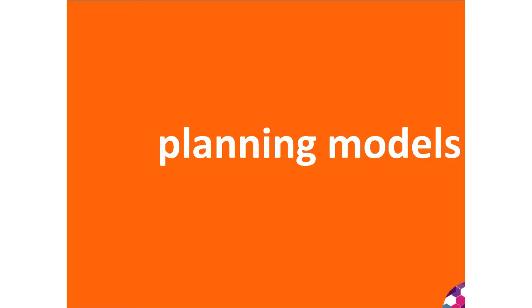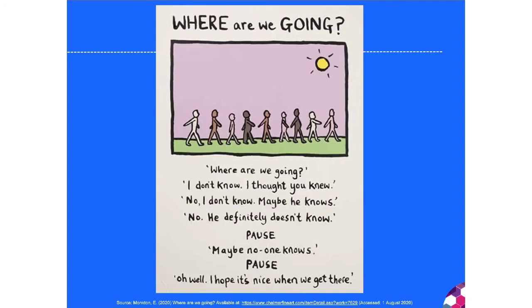Planning models essentially help us know where we're going. There's a poster that says: 'Where are we going? I don't know, I thought you knew. No, I don't know. Maybe he knows. No, he definitely doesn't know. Oh well, I hope it's nice when we get there.' Often public health projects can be like this — they don't have clear vision, clear aims or clear objectives — so we can spend money that leads nowhere. Planning helps us know where we're going, how we're going to get there, and how we'll know when we get there.